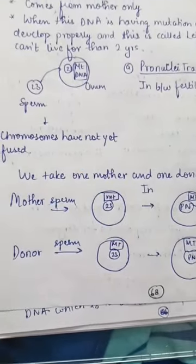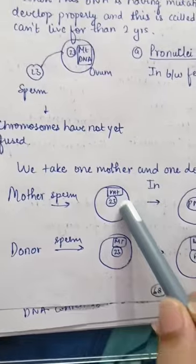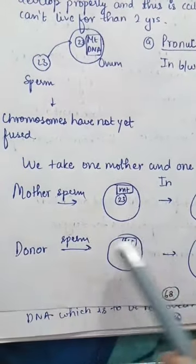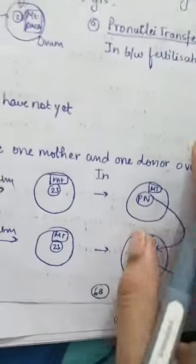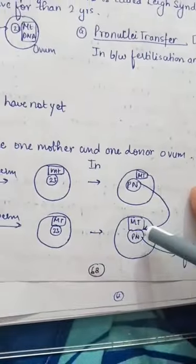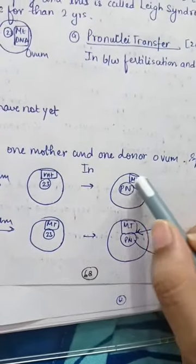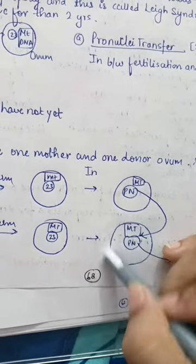Pronuclei transfer is a type of three parent baby technique. First we will be taking two ovums, one from the mother and one from the donor, and fertilize them with sperm. Then what happens is we will remove the donor's pronuclei and transfer the mother's pronuclei to the donor's ovum.